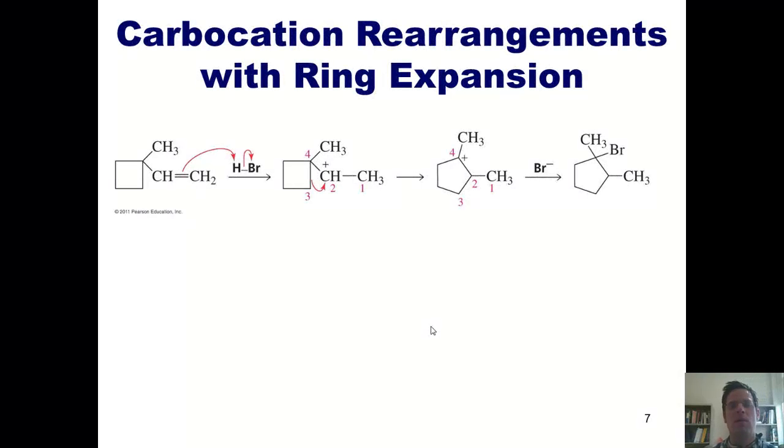In our previous lecture, I talked about carbocation rearrangements, that is, one-to-methyl shifts and one-to-hydride shifts. Whenever I have an intermediate that has a relatively unstable carbocation, and I can have a methyl or a hydrogen shift one position over to increase the stability of that carbocation by moving the positive charge to a more substituted carbon, it will proceed.